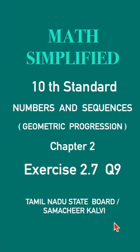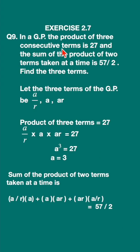Exercise 2.7, question 9. Click here for the full exercise. In a GP, the product of three consecutive terms is 27 and the sum of the product of two terms taken at a time is 57 by 2. Find the three terms.